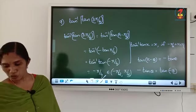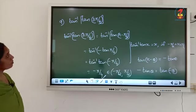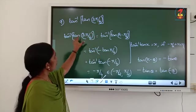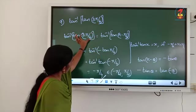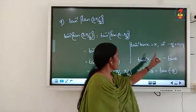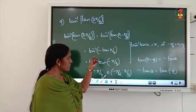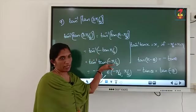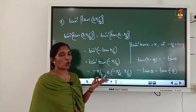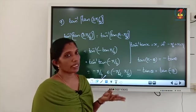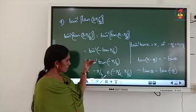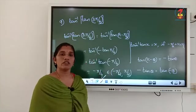Once again: tan inverse of tan 3 pi by 4. We simplify: 3 pi by 4 equals pi minus pi by 4. Then tan of pi minus theta equals minus tan theta. Then we put the minus inside — this is only possible for tan, sine, and cosec. For cos, minus theta equals cos theta, so we cannot take minus inside. For tan, we write negative pi by 4.